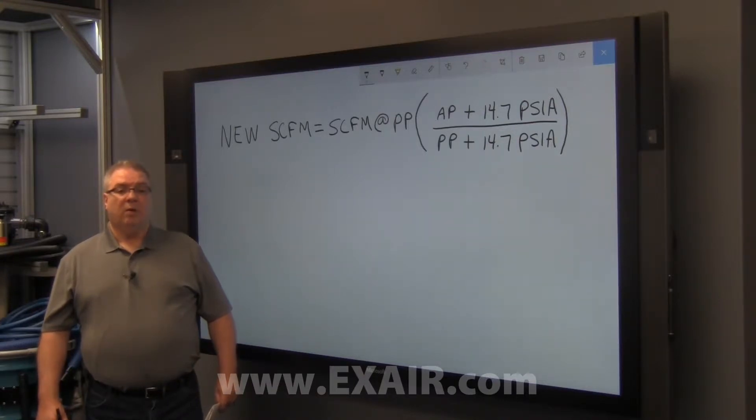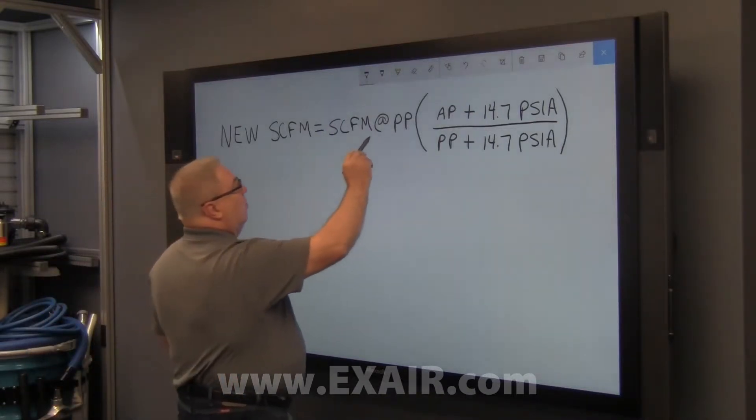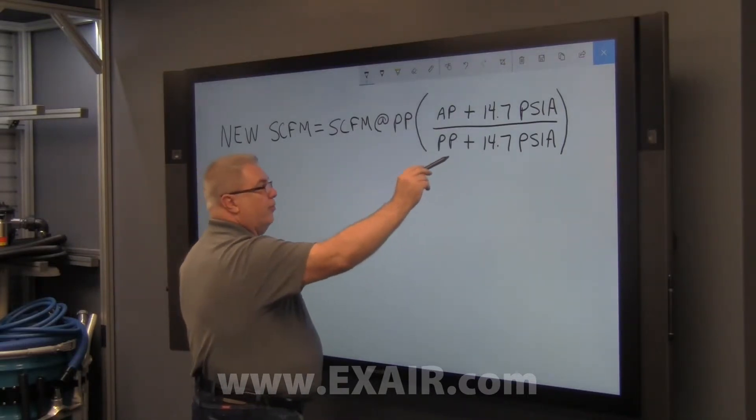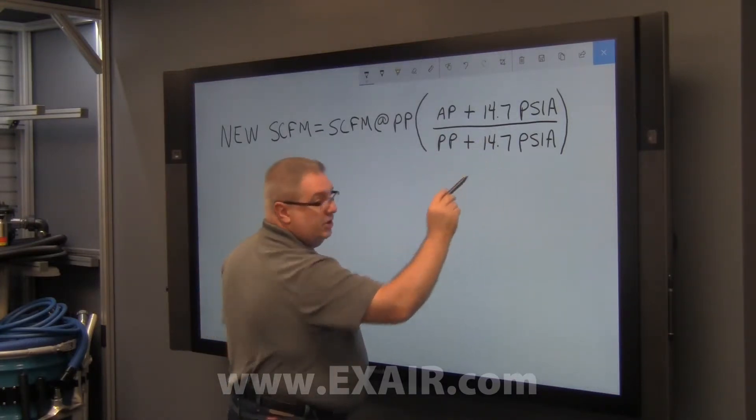Knowing the air consumption value at a published pressure along with the actual pressure, we can use the formula that the new SCFM will equal the SCFM at published pressure multiplied by the actual pressure plus atmospheric over the published pressure plus atmospheric.